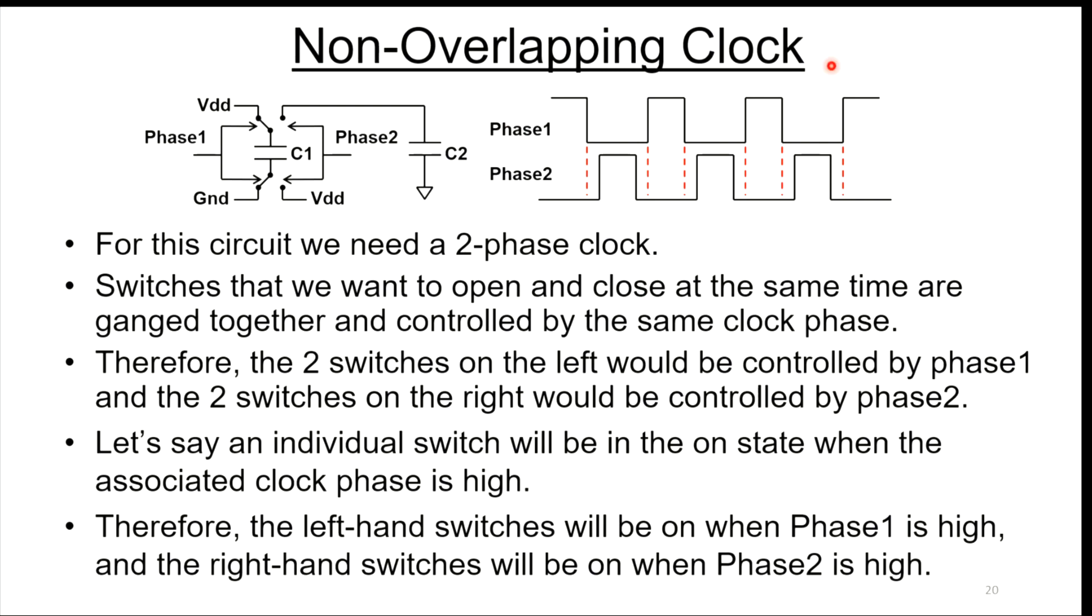This is what the non-overlapping clock scheme would look like. For this circuit to work, we need a two-phase clock. Switches that we want to open and close at the same time, we're going to gang together and control those by the same phase of the clock. The switches on the left are controlled by phase one, and the switches on the right are controlled by phase two. An individual switch will be in the on state when the associated clock phase is high.